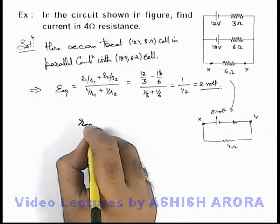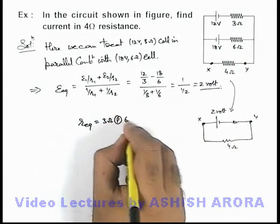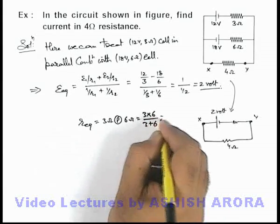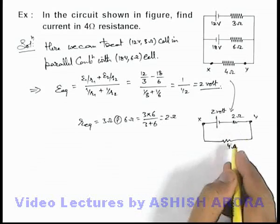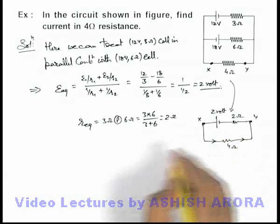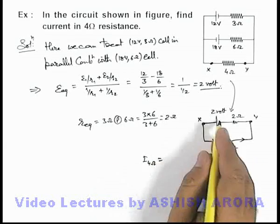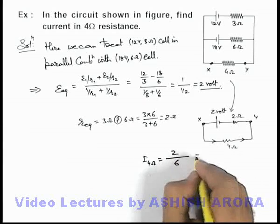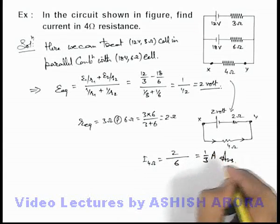And this internal resistance R equivalent can be taken as 3 ohm in parallel with 6 ohm, that will be 3 into 6 by 3 plus 6, that is 18 by 9, which is also 2 ohms. So if this 4 ohm cell is connected across it, we can directly write the current flowing in this 4 ohm resistance will be: the potential difference is 2 divided by 4 and 2 in series combination, this will be 6, that is 1 by 3 ampere. That will be the answer to this problem.